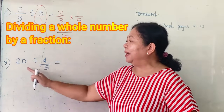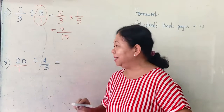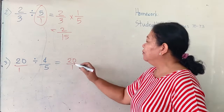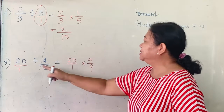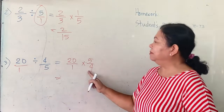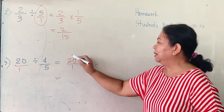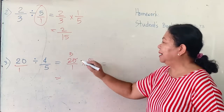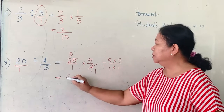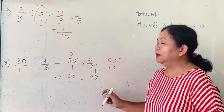Another example is dividing a whole number by a fraction. Look here — twenty. Understood there is one denominator. So you will write twenty over one as it is, then get the reciprocal of four over five, which is five over four, and change division to multiplication. Here, we can apply method two by cancellation because four and twenty could be divided by four. Four divided by four is one, and twenty divided by four is five. Now, we will multiply the numbers: five times five over one times one — this is equal to twenty-five over one. If the denominator is one, write the number as a whole number — twenty-five.